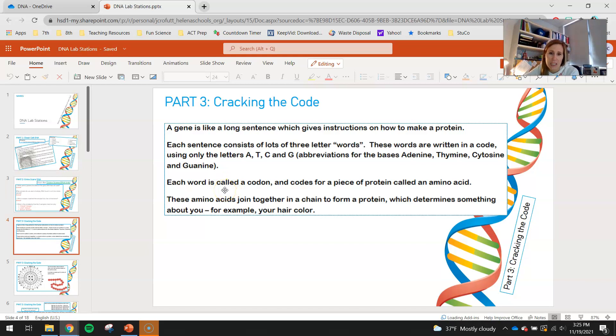Each sentence consists of lots of three-letter words. So we kind of group each of those A's, T's, C's, and G's up into groups of three. These words are written in a code using only the letters A's, T's, C's, and G's, abbreviations for the bases adenine, thymine, cytosine, and guanine. Each word is called a codon and codes for a piece of protein called an amino acid. These amino acids join together in a chain to form a protein which determines something about you, for example, your hair color.